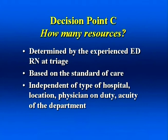So we've now addressed decision points A and B. Let's move on to decision point C: how many different resources will this patient consume? Research has demonstrated that experienced emergency department nurses are actually very good at predicting how many different types of resources a patient will consume. This is based on the standard of care for a given chief complaint or diagnosis — it is independent of the type of hospital, location of the hospital, physician on duty, or acuity of the department. Of course, there may be some regional variations in physician ordering.